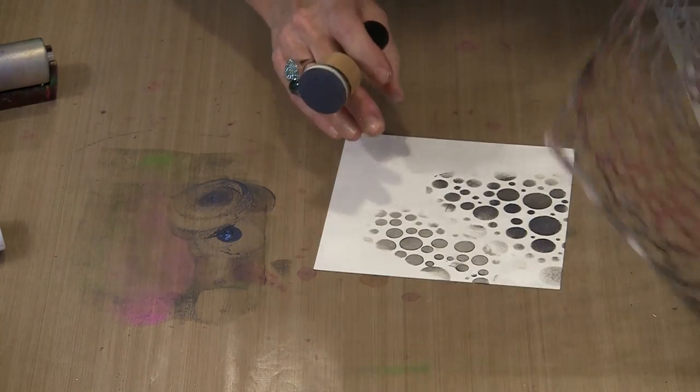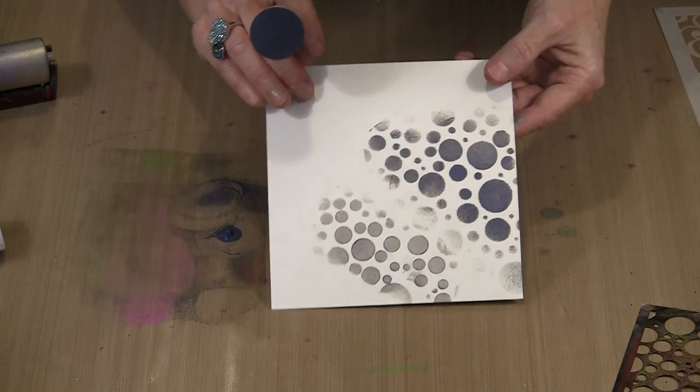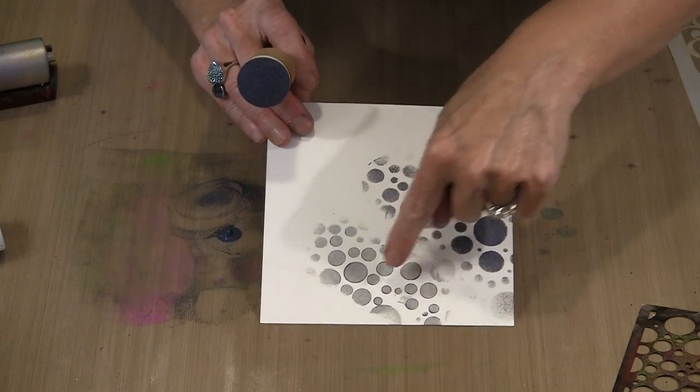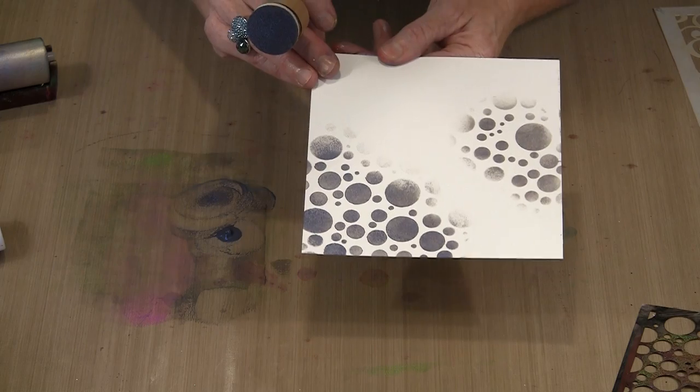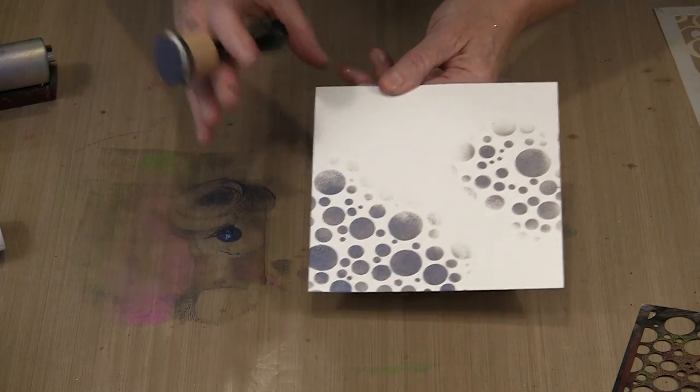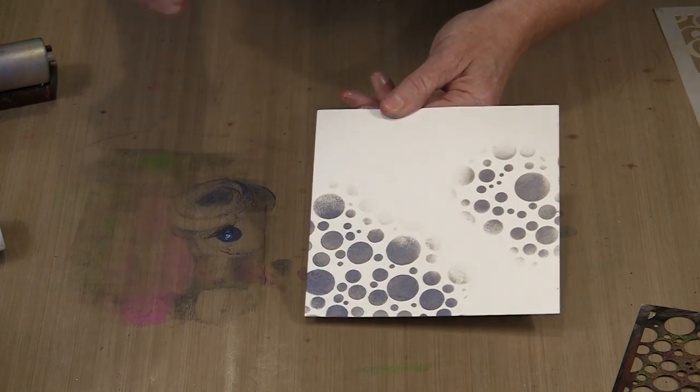Alright, so this is not the neatest stenciling job you will ever see. But you can see the difference between here and here. And then if you come over here, this was one of my original ones. If I let the light hit this, you can see that there is glimmer in here. So again, lots of different ways that you can play with this.